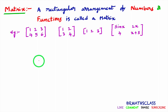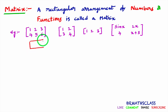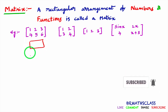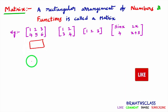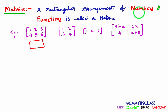Please observe these examples. If you observe this arrangement, this arrangement is in which shape? This arrangement is in rectangle shape. We arranged these numbers in rectangle shape. So the rectangular arrangement of numbers is called a matrix — so is this a matrix? Yes, this is a matrix.